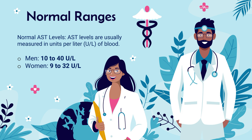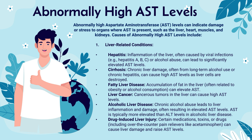Now let's take a closer look at what causes abnormally high and abnormally low levels of AST in the blood. Abnormally high aspartate aminotransferase levels can indicate damage or stress to organs where AST is present, such as the liver, the heart, the muscles, and the kidneys. Causes of abnormally high AST levels include liver-related conditions — a broad basket of liver diseases including hepatitis, liver cirrhosis, fatty liver disease, liver cancer, alcoholic liver disease, and drug-induced liver injury.